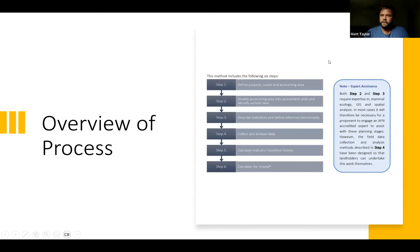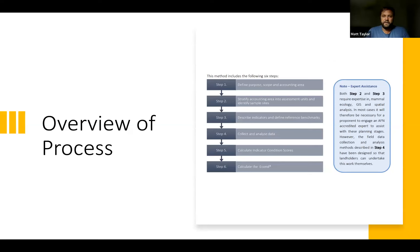I'll run through a brief overview of the process for developing an environmental account using this method. Everything I'm talking to today is clearly spelled out step-by-step in the method documents — basically like a recipe for producing an environmental account. The first step is a scoping exercise where you define the purpose of your account, identify the kinds of assets you want to monitor — which can include assets beyond just fauna — and pick the area you're going to document condition of using the AFN framework.